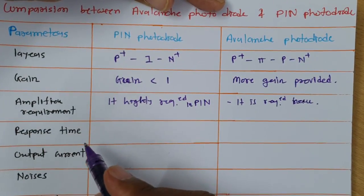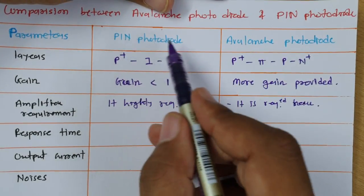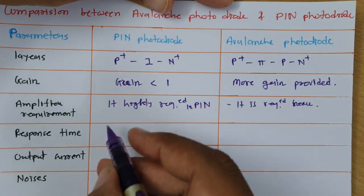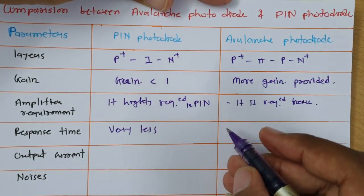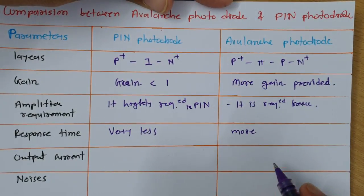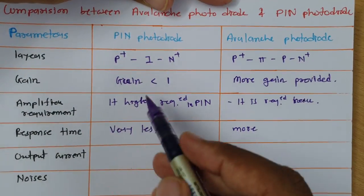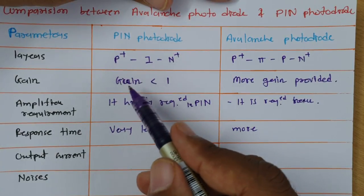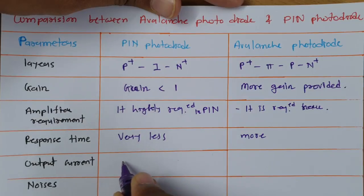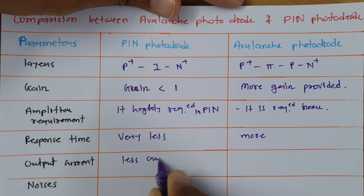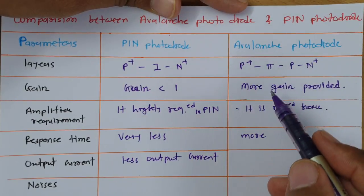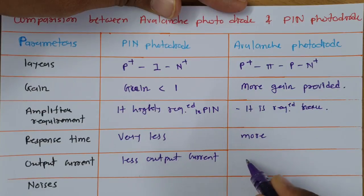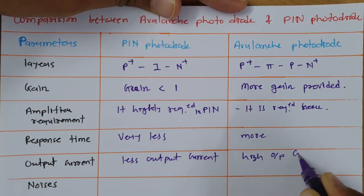Now, response time: it is very less in case of PIN photodiode, but it is more in case of avalanche photodiode. Regarding output current: since gain is not there in PIN diode (or less than 1), the output current will be less. While in case of avalanche photodiode, it has very high gain, so output current will be high.